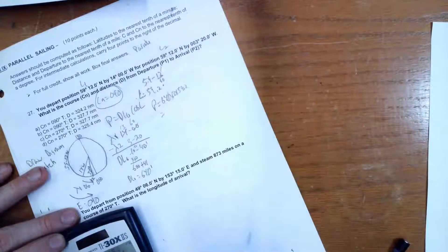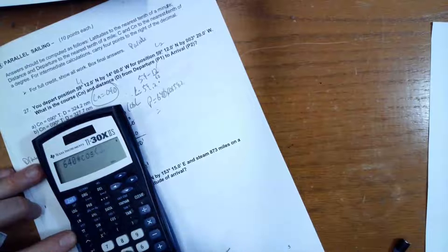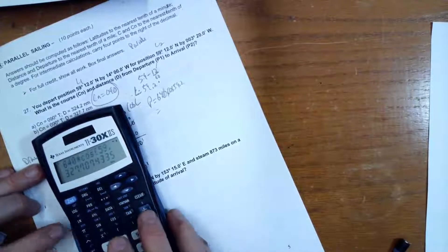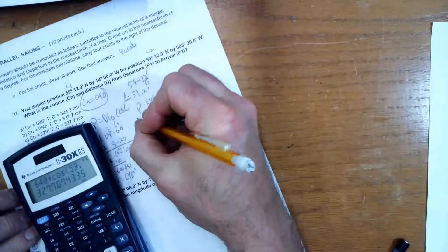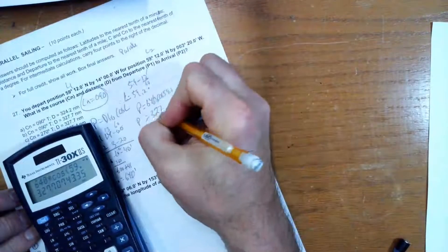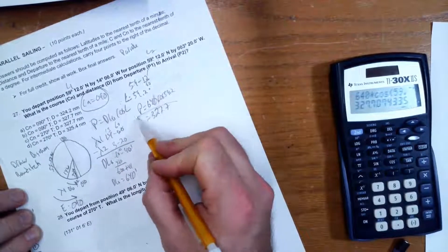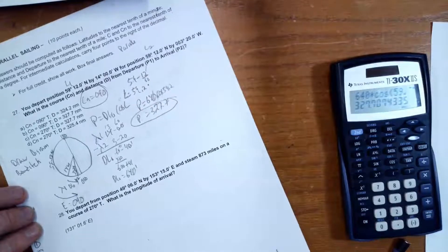And when I do that, so 640 times cosine of 59.2, that is 327.7. So P is 327.7. Okay, so that is the answer for that, and that concludes that problem.